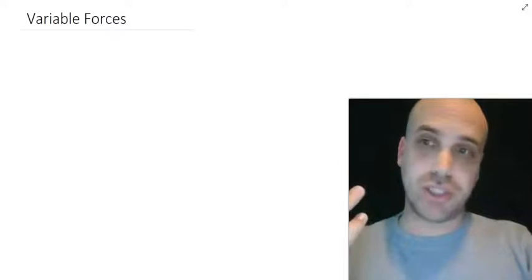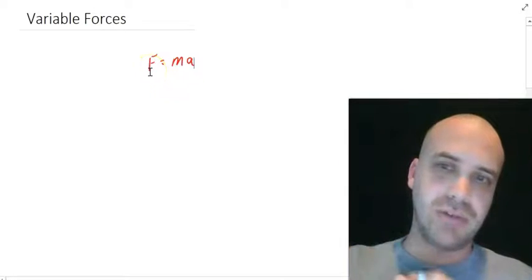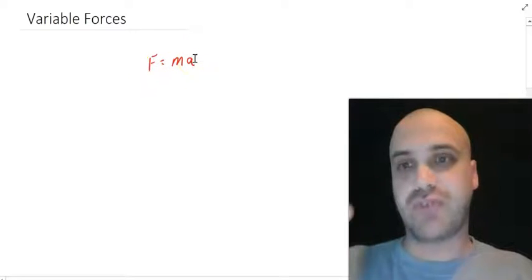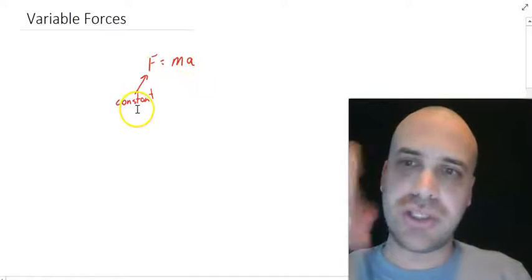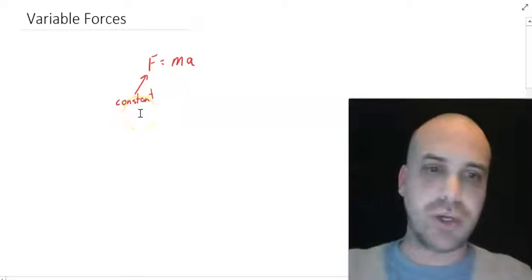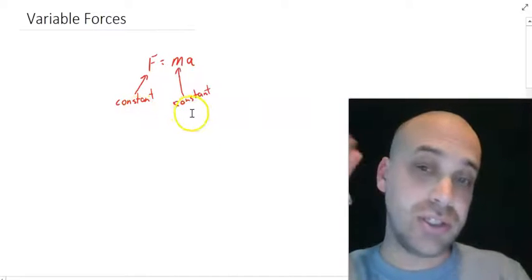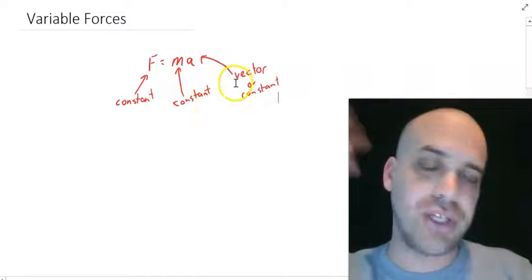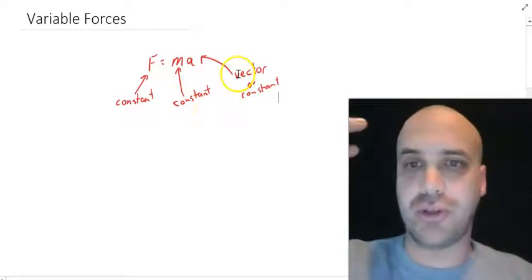You've already got the hang of that force equation. Force equals mass times acceleration. Now, the things that we've been subbing into this equation are as follows. We've been subbing a constant in for force, 10 newtons, 12 newtons. We've been subbing a constant in for mass, 10 kilograms, 12 kilograms. For acceleration, we've been subbing in a vector or a constant.